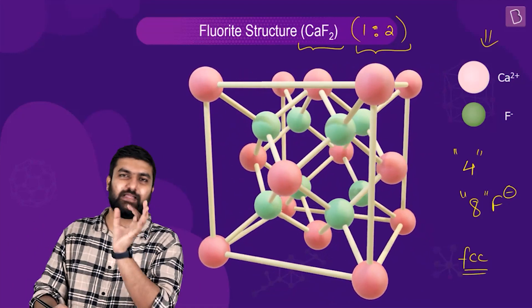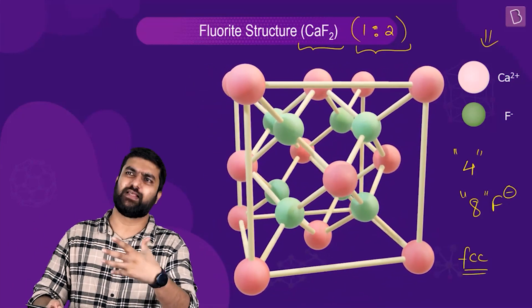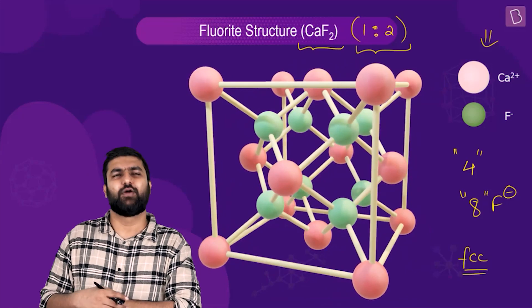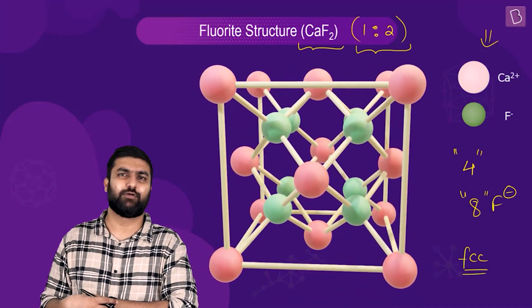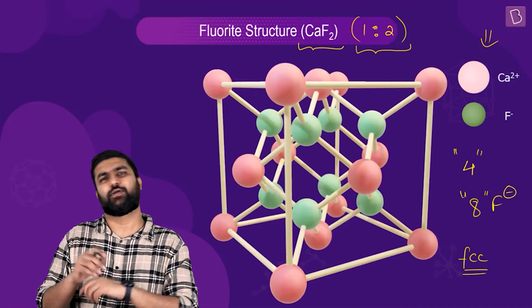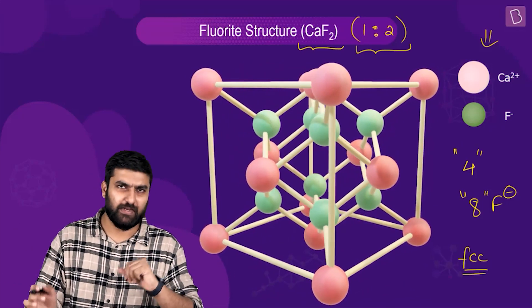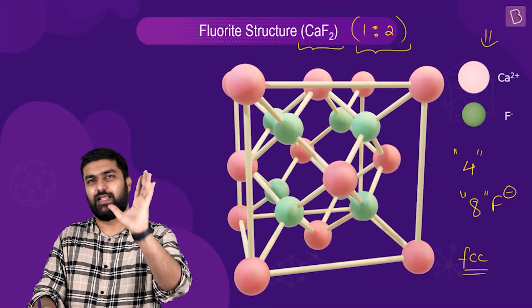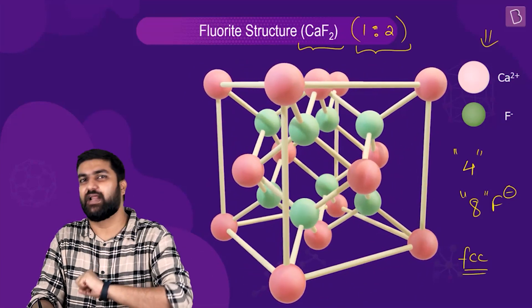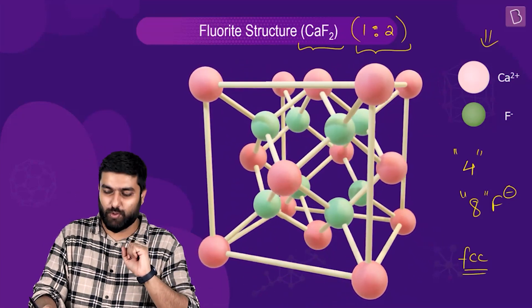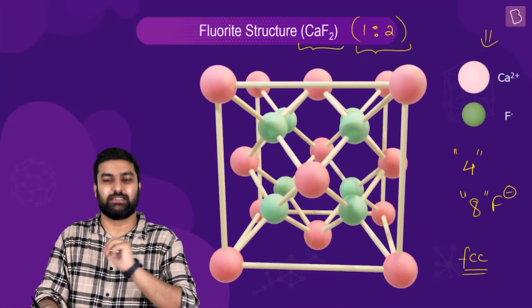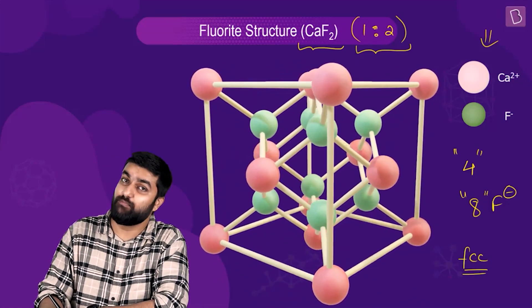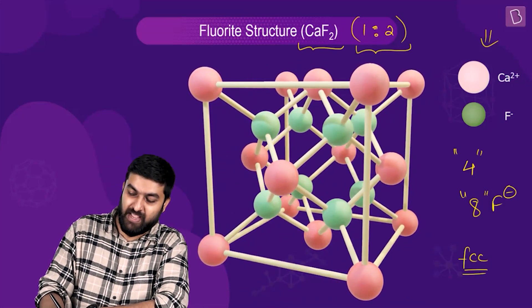You'll only have eight F⁻ when all the tetrahedral voids are occupied. You could also have some combination of octahedral and tetrahedral voids filled, but to keep things simple, they occupy in such a format — all tetrahedral voids filled.